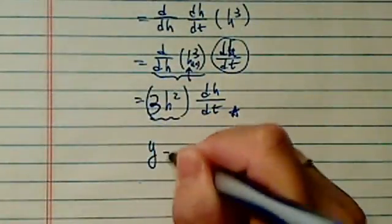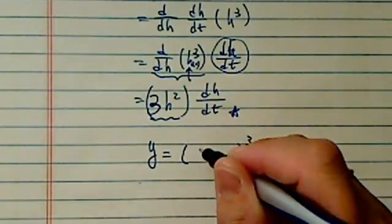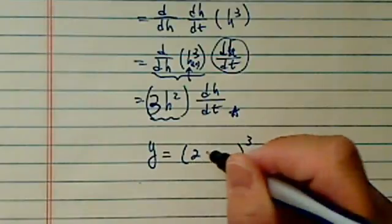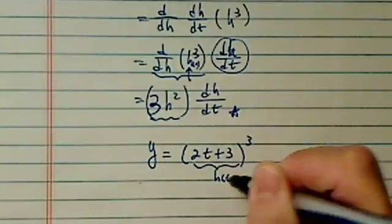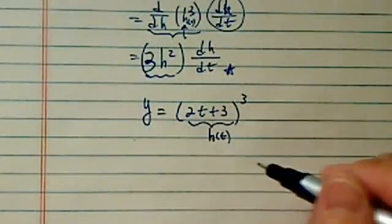Let's take an example. If we're given y equals, in a cube form, but then it's inside, so we have 2t plus 3. So this is h(t). So function h is a function of t.